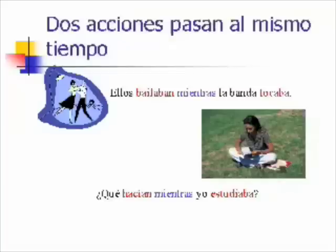The two actions pasan al mismo tiempo. Here, in our first example: 'Ellos bailaban mientras la banda tocaba' — they were dancing while the band played. Notice that we're not using the 'used to' or 'would' translation here; instead we look at that key word, mientras, meaning 'while.' Two actions are taking place at the same time in the past — that's why you use the imperfect.